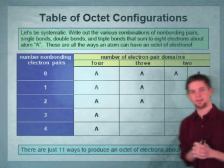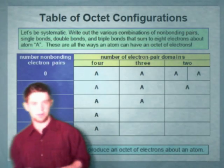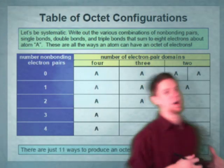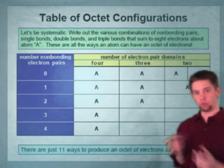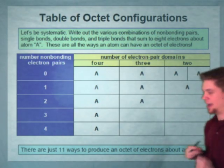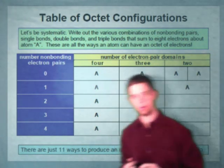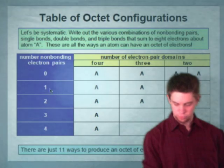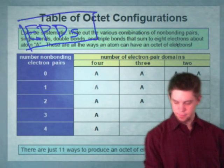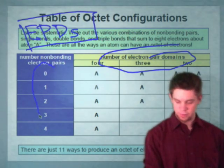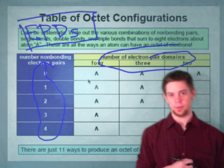One interesting thing about the Lewis structure concept is that it allows us to think about a limited number of ways to place an octet of electrons around an atom. What you're looking at is a table of octet configurations, and there are really very few ways to draw a Lewis structure placing an octet around every atom — here you see 11 different ways. The table is organized according to the number of electron pair domains, or EPDs, along the columns, and the number of non-bonding electron pairs along the rows.